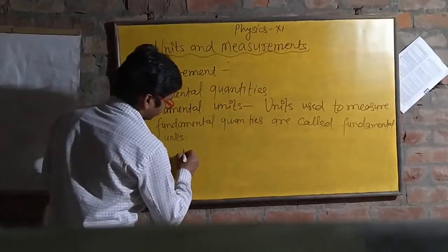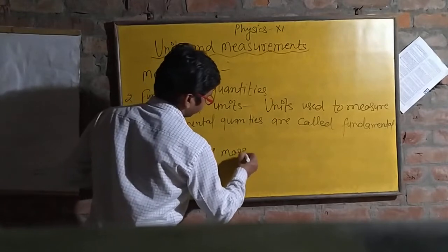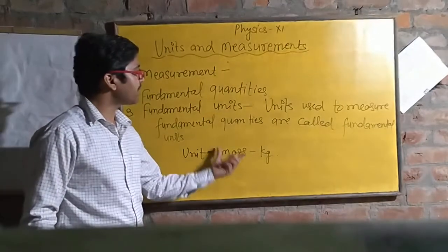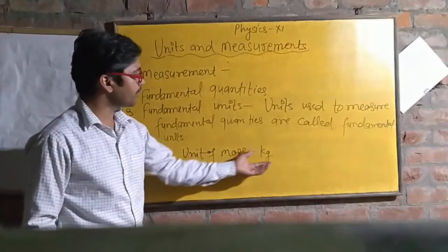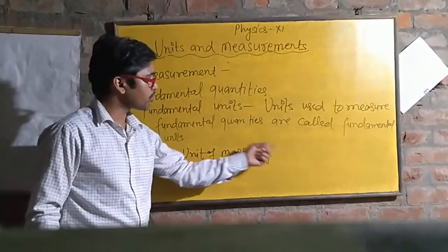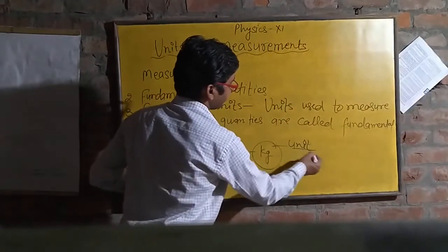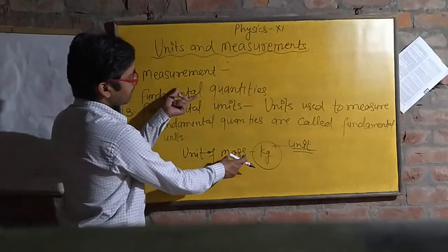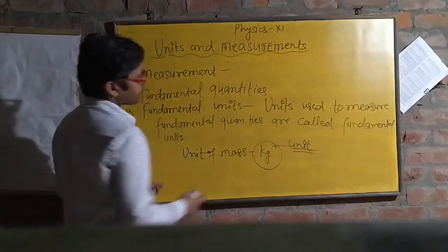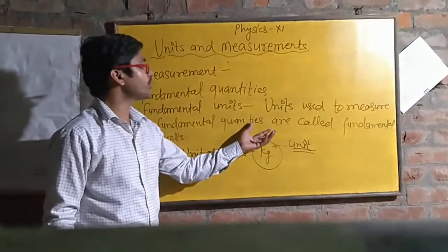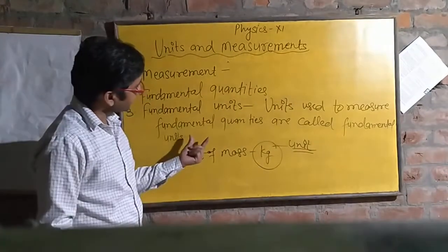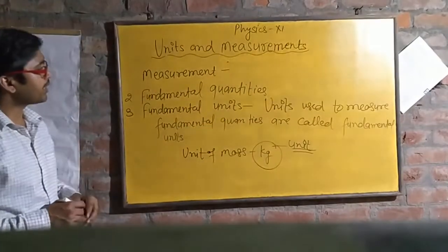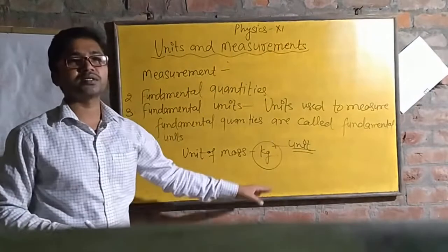For example, the unit of mass is kilogram. Mass is a fundamental quantity and we need some unit to measure this mass. That unit — kilogram — is a fundamental unit. Units which are used to measure fundamental quantities are known as fundamental units. Now I am going to write down the seven fundamental quantities and their units in a table.